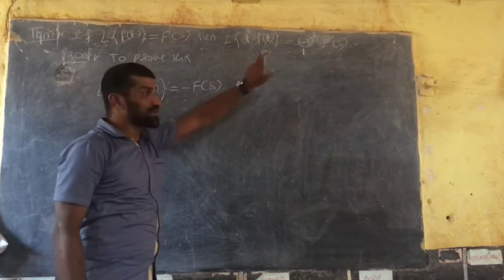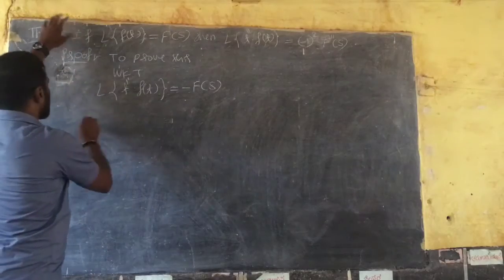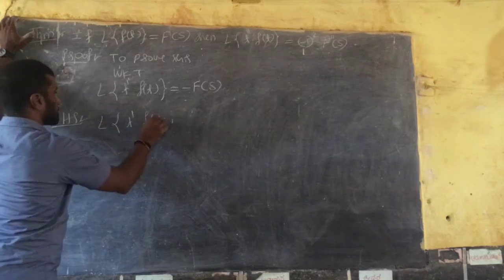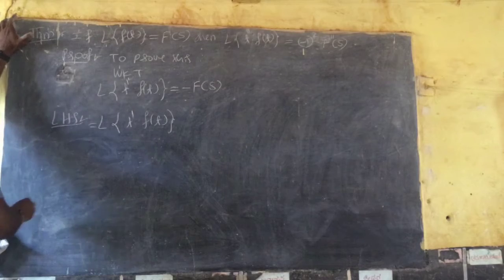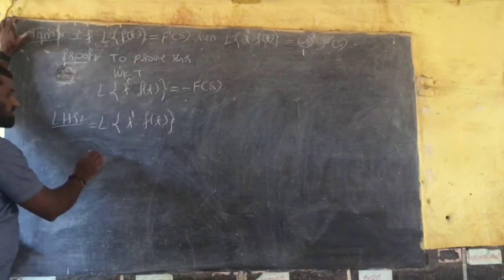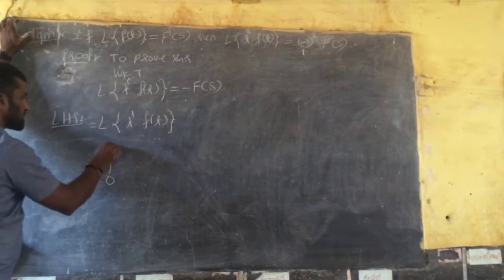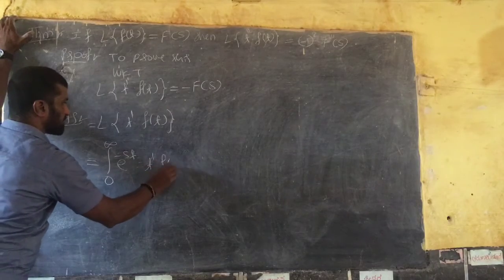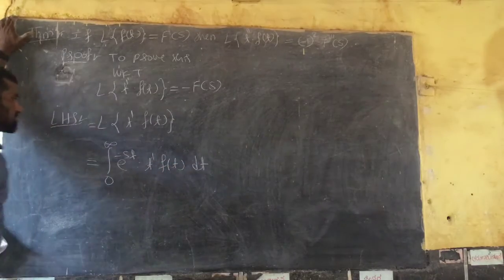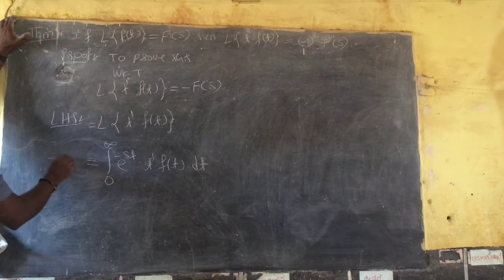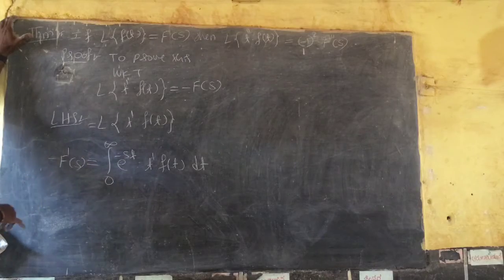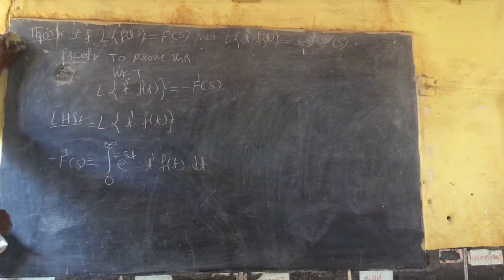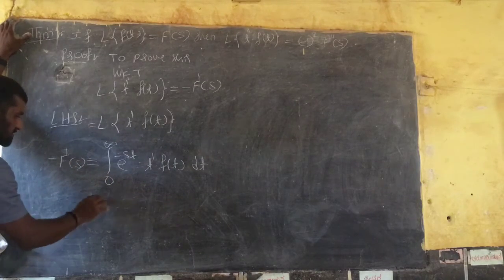To prove this theorem using that concept, take the LHS: Laplace of t² · f(t). By the definition of Laplace, I can write the integral from 0 to infinity of e to the power minus st, into t · f(t), dt. From the previous class, this equals minus F dash of s. So it is F dash of s — now differentiate the same thing, partially.